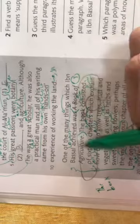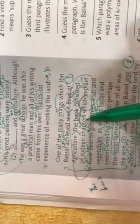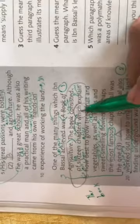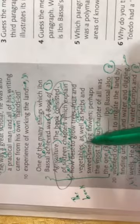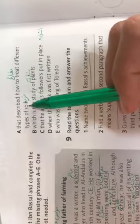The book consisted of 16 chapters which explain how best to grow trees, fruit and vegetables, as well as herbs with sweet smelling flowers. Perhaps the most famous chapter of all was the one that described how to treat different types of soil.